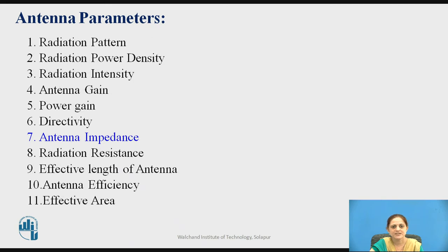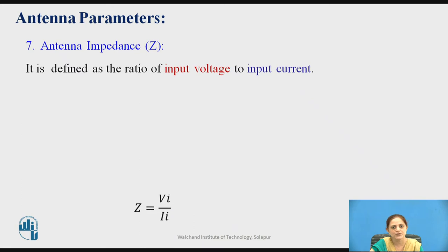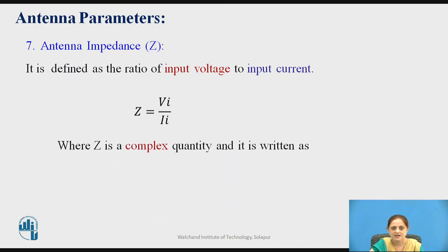Now consider the next parameter: antenna impedance. What is antenna impedance? It is denoted with the letter Z. It is defined as the ratio of input voltage to input current, that is Z equal to Vi by Ii, where Vi is the input voltage and Ii is the input current. Z is a complex quantity and therefore it can be written as Z equal to R plus jX.